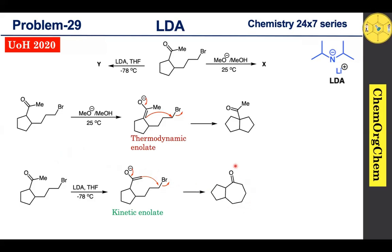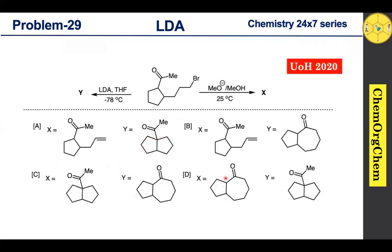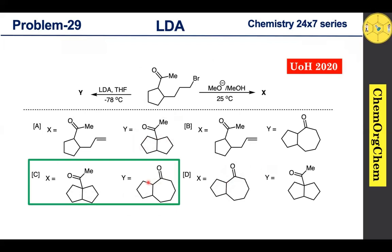This leads to the generation of the corresponding bicyclic ketone as the product. Based on our discussion, the correct answer is option C. That's today's problem. If you enjoyed this video, please give it a thumbs up and share it with your friends. Don't forget to subscribe and click the bell icon to stay updated with our latest videos. Thanks for watching — bye bye!